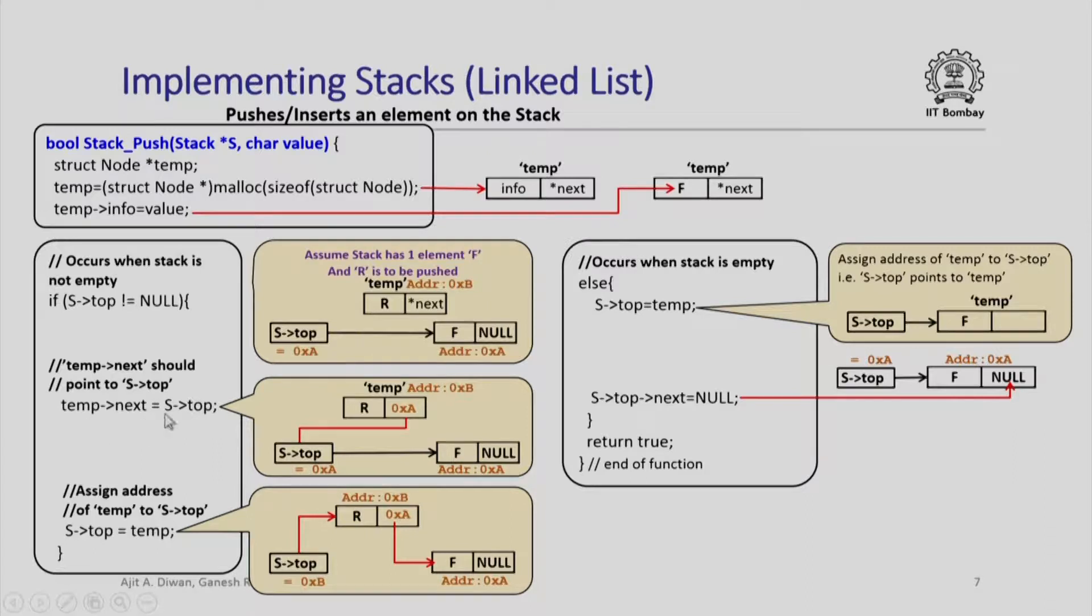Temp next is assigned to s top first. So notice this temp. This temp next in it is inserted the address of s top. So that indirectly it points now to f. We have now achieved that this node points to this. However s top must point to this in turn. So we set s top to temp which is the temporary node that we have created.